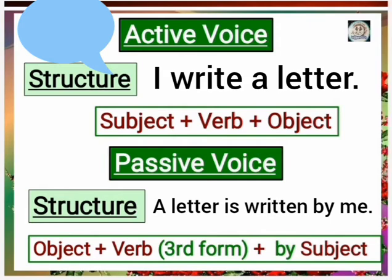In passive voice, we always use the third form of the verb. The object becomes the subject, and the original subject is placed after 'by.' For example: 'A letter is written by me.' Here 'written' is the third form of the verb, and 'me' is now the subject after 'by.' So active voice is Subject + Verb + Object, and passive voice is Object + Verb + Subject.